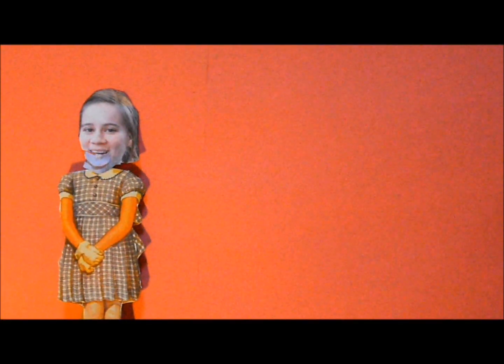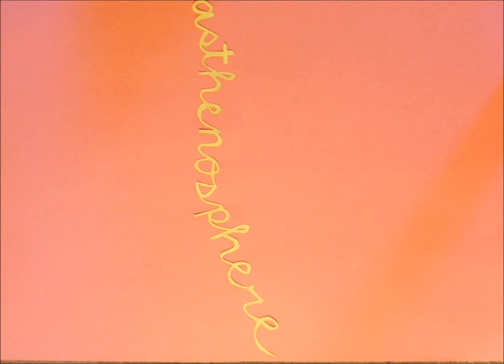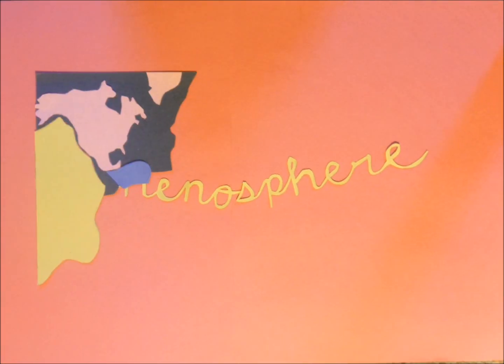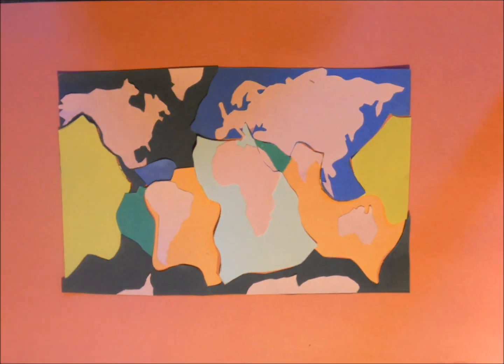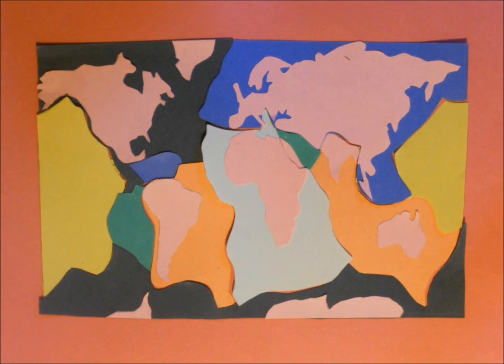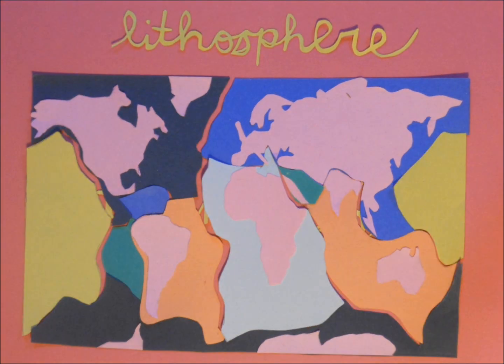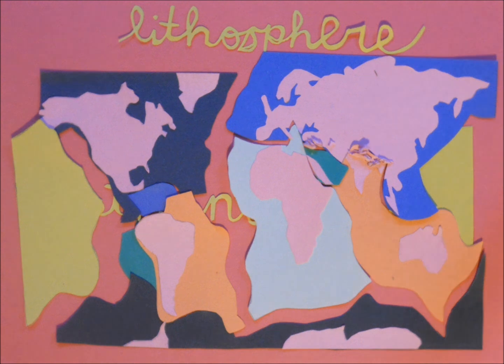So what's the current understanding of plate tectonics? We know that part of the mantle is a hot, slightly viscous layer called the asthenosphere. The uppermost part of the mantle and crust are divided up into several large tectonic plates, which make up the rigid lithosphere. These plates move around on the asthenosphere and interact with each other in several different ways.